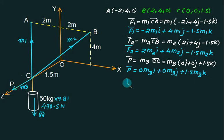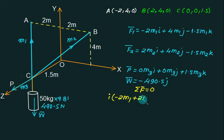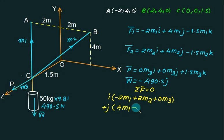W bar is the weight acting downward. Downward is negative, so it equals minus 490.5 j. This force is parallel to the y-axis. Applying sigma F bar equal to zero, we collect the coefficient of i: minus 2m1 plus 2m2 plus 0m3, then the coefficient of j: 4m1 plus 4m2 plus 0m3.